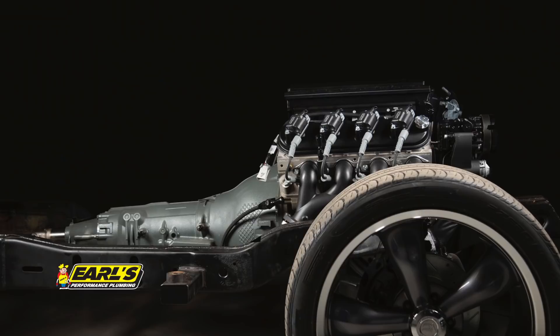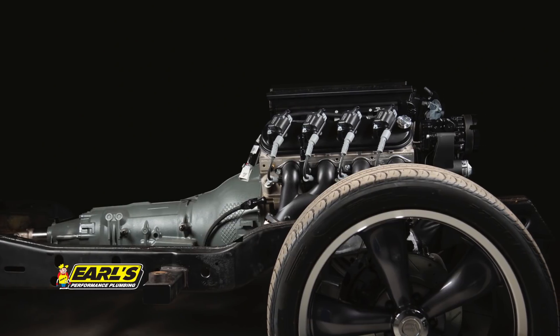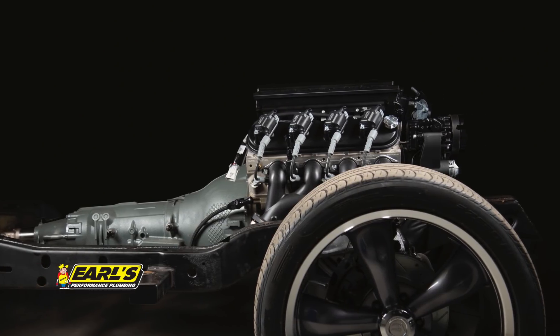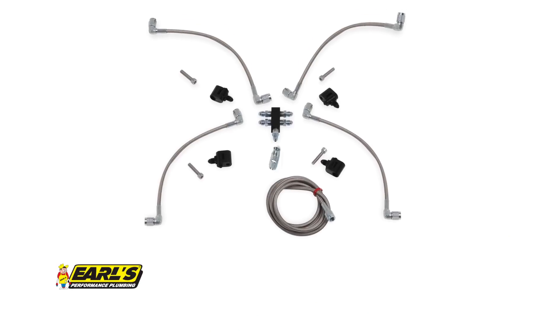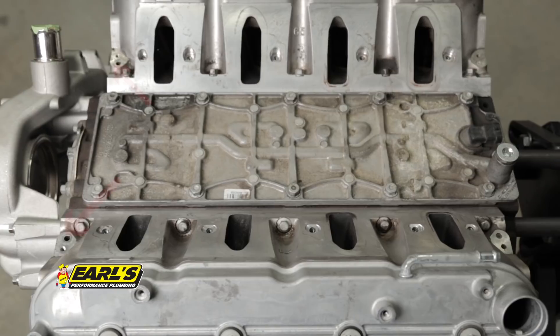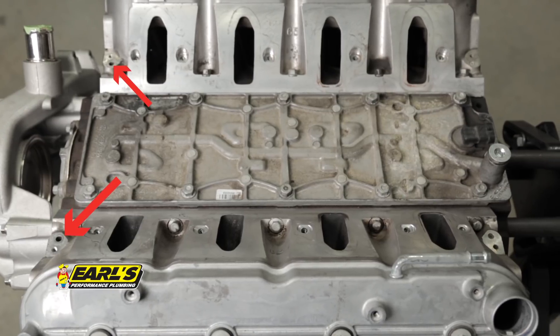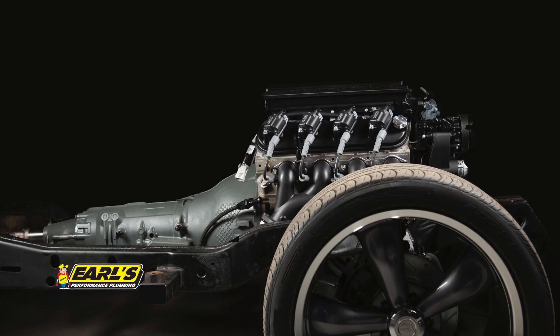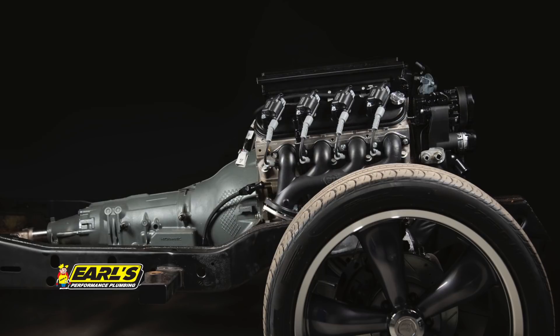If your engine has four steam ports, or you've done an LS swap and positioned the engine level or near level in the chassis, we can help complete your installation with one of our four-port adapter kits. Later LS engines typically use only two steam ports, which are located at the front of the cylinder heads. So if your installation has the front of the engine elevated higher than the rear, you can get by with just a two-port adapter kit.